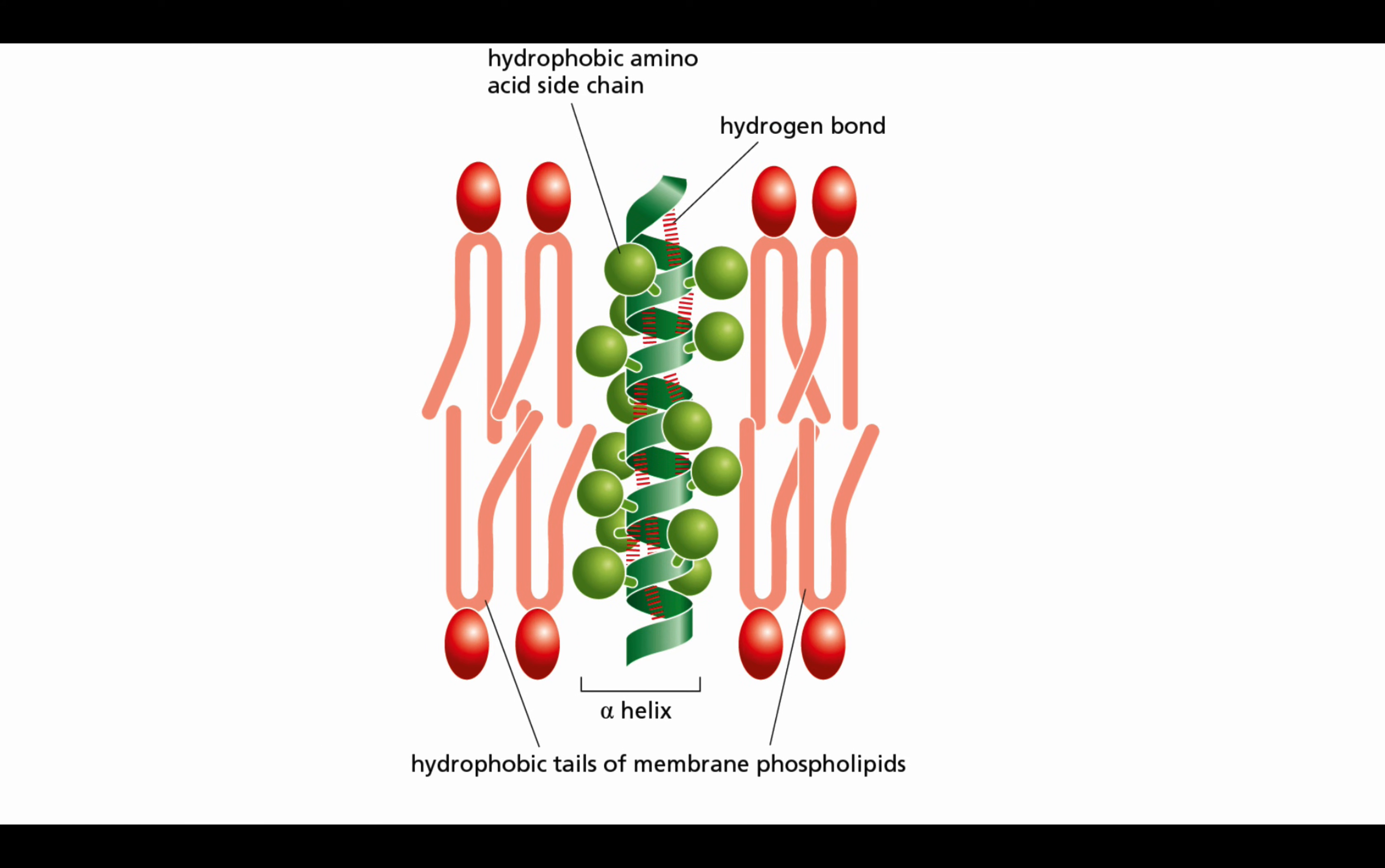In this segment of a transmembrane protein, the hydrophobic side chains of the amino acids forming the alpha helix contact the hydrophobic hydrocarbon tails of the phospholipid molecules, while the hydrophilic parts of the polypeptide backbone form hydrogen bonds with one another along the interior of the helix.